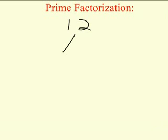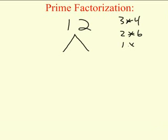So prime factorization, the first thing you do is look for a factor pair. Now we know that there are several numbers that will get us 12. We could do 3 times 4, we could do 2 times 6, we could do 1 times 12.